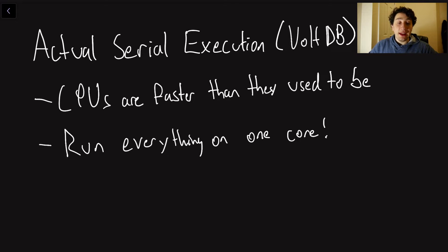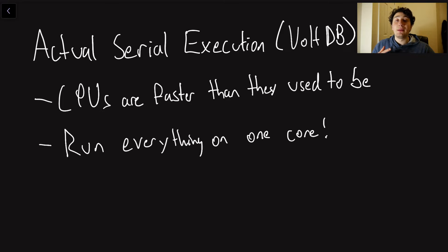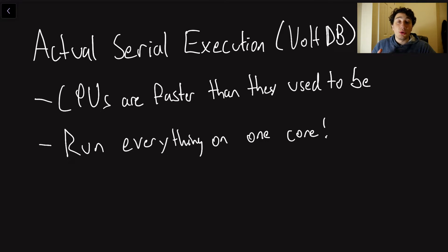So actual serial execution — what is it? Well, basically in the past few videos what we've done is we've talked a lot about weak forms of isolation. The reason being that actually achieving transactions that don't step on each other's toes and cause race conditions is not only hard to do, it's also expensive to do. It makes the performance of the database much slower. And so when actually trying to achieve full serializability or isolation, we need to make sure to keep performance as good as possible, or else our databases are going to be pretty useless at scale. So one attempt at doing this has come around a little bit more recently, and it's known as actual serial execution.